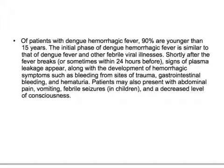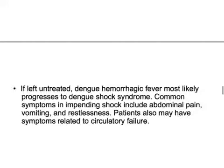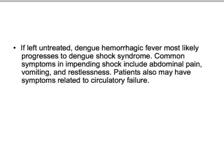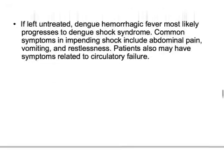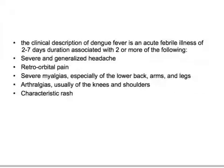Signs of plasma leakage appear along with hemorrhagic symptoms such as bleeding from trauma sites, gastrointestinal bleeding, and hematuria. Patients may also present with abdominal pain, vomiting, febrile seizures, and decreased level of consciousness. If left untreated, dengue hemorrhagic fever will most likely produce dengue shock syndrome. Common symptoms of impending shock include abdominal pain, vomiting, and restlessness. Patients may also have circulatory failure with hypotension and tachycardia or bradycardia.